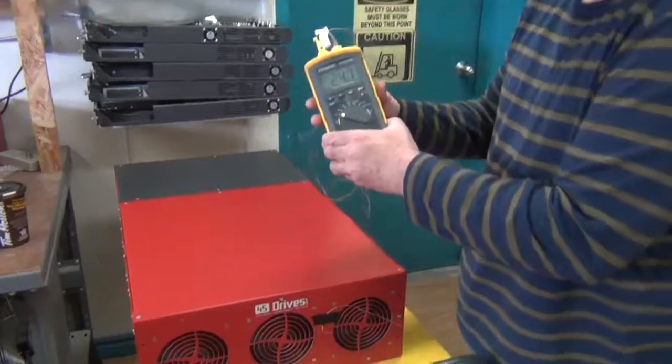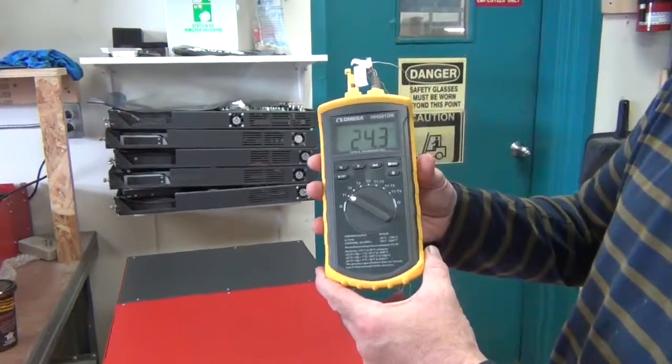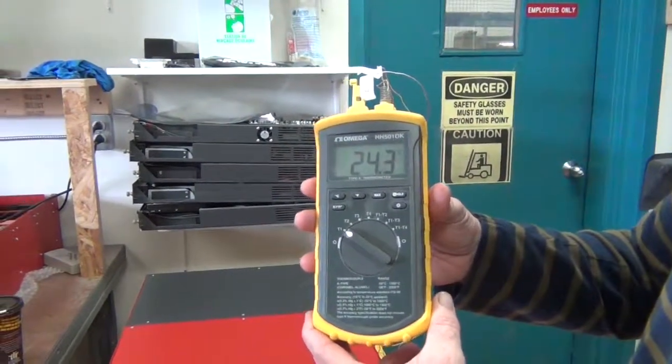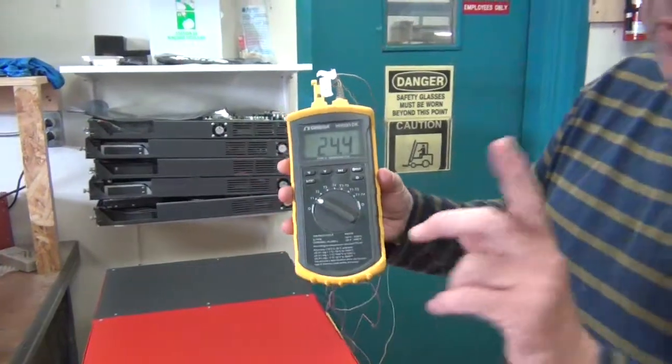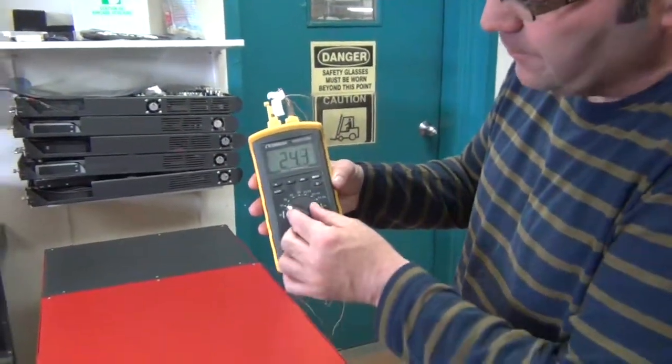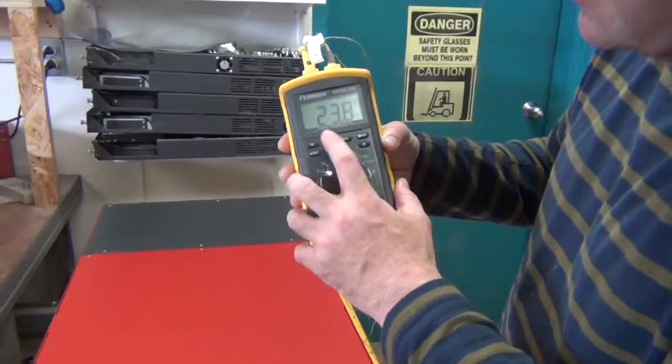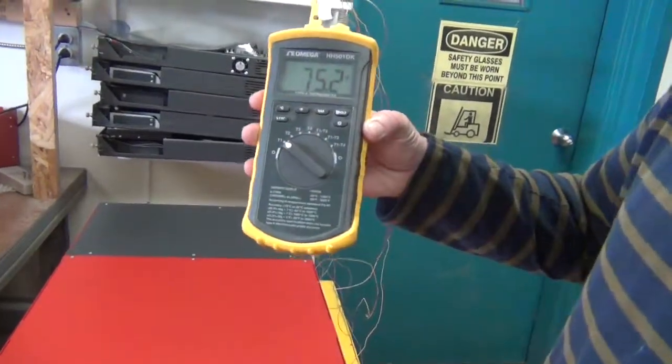As you can see, the ambient temperature, T1, is 24 degrees Celsius. Remember that, Celsius everyone. If we want to do Fahrenheit, that would be 75 degrees Fahrenheit.